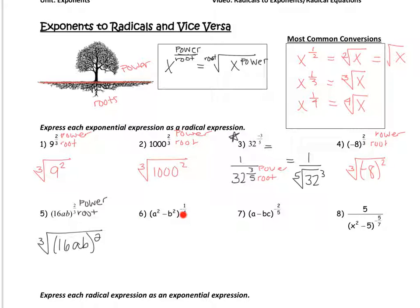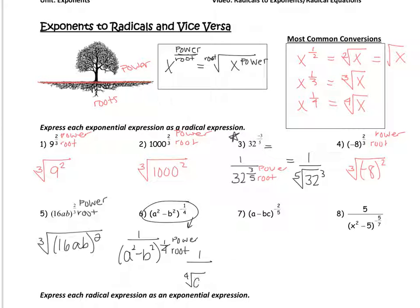For example six, the exponent is negative, so the first thing is to bring that negative exponent downstairs. Everything here goes down, giving one over a squared minus b squared to the one-fourth power. The four is a root and the one is a power, so the answer is one over the fourth root of a squared minus b squared. I won't write 'to the first power' because if it's to the one-fourth, I know that means the fourth root. See if you can do seven and eight yourself and pause the video.